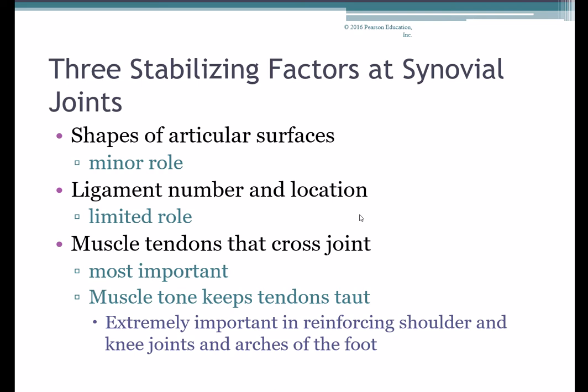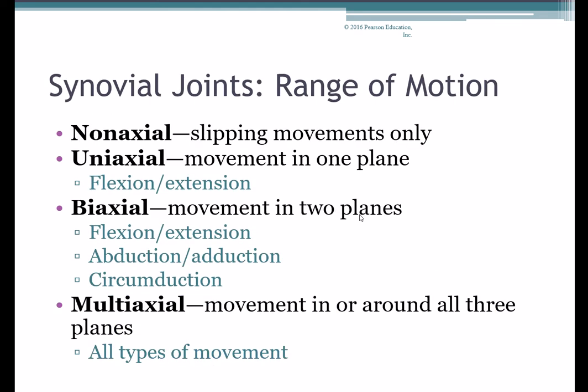The biggest factor stabilizing our synovial joints is muscle tendons that cross over the joints. In chapter nine we'll talk about muscle tone — the partial contraction of all skeletal muscles — and how skeletal muscles attach to bones through tendons. With the muscles partially contracted, those tendons are kept taut as they cross over the joints, which is very effective at reinforcing and adding stability. This is particularly important at the shoulder, the knee, and the arches of the foot.